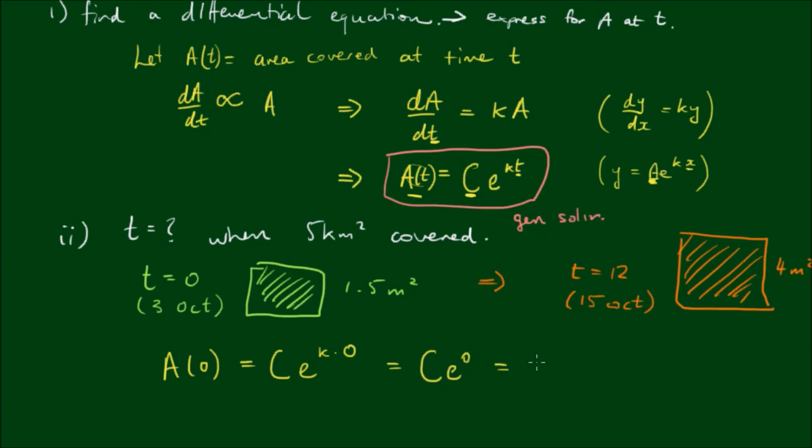And the area then is equal to 1.5 meter squared. So we have C, the constant at the front, equal to 1.5.